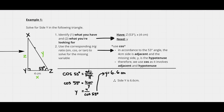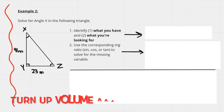Evaluating that gives y = 6.6 centimeters. So side y is 6.6 cm. All we did was solve the equation cos(53°) = 4/y for the variable y — just like solving any other algebraic equation.